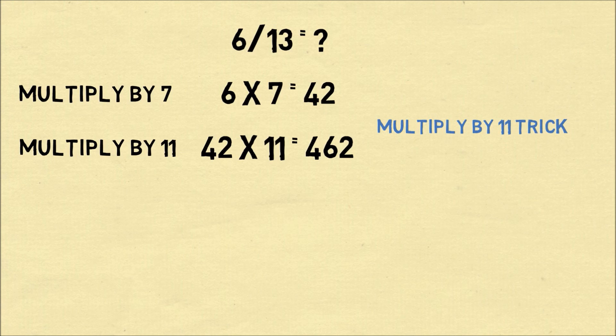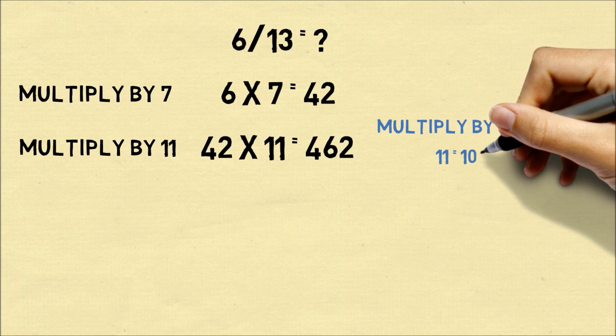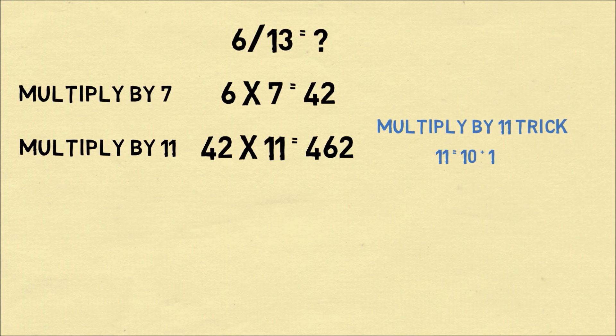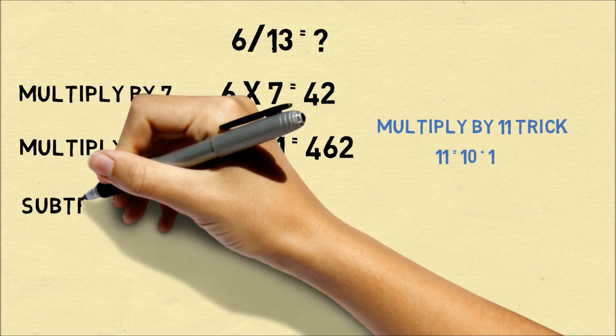There's a way you can multiply numbers by 11. I've explained the trick in a different video. You can also remember that 11 is equal to 10 plus 1. So 42 times 11 is 420 plus 42.